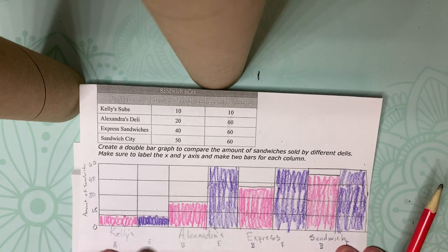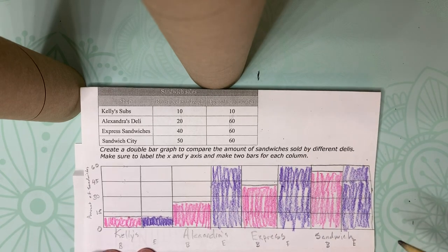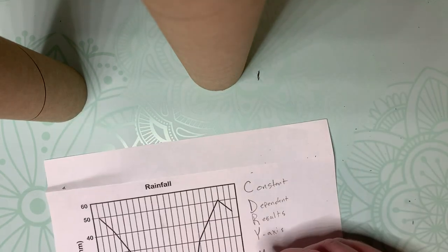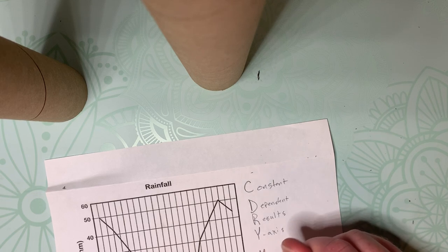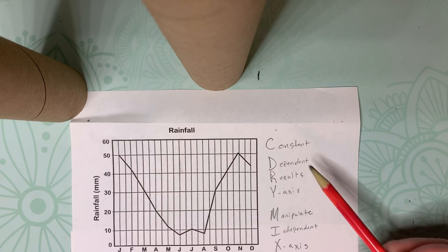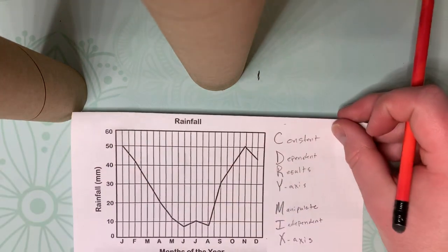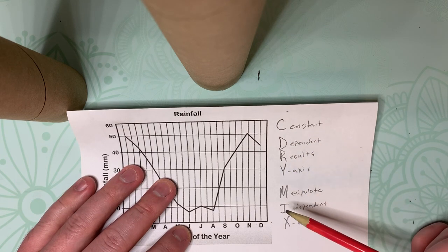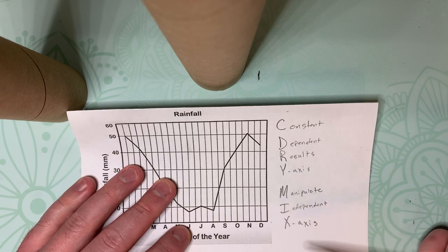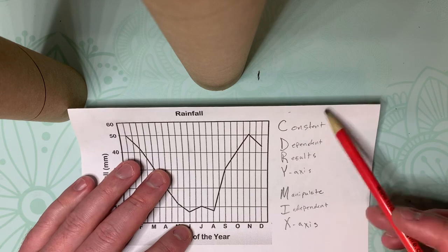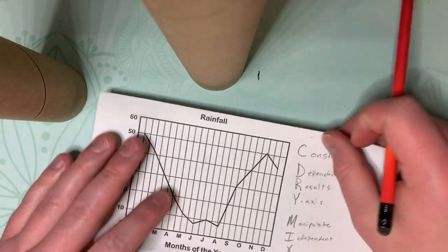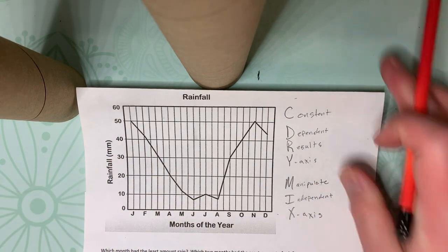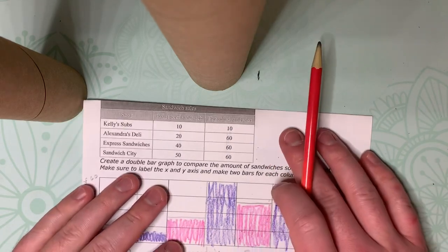So getting started with this, students, you do need to remember C-DRY-MIX. And that will help kind of push you through this. C-DRY-MIX is our constant, our dependent, which is our result, our y-axis, our independent variable, which we manipulate or we change, and then our x-axis. And this just kind of helps you set up graphs, look at graphs, figure out which one is your independent and dependent variable, and go from there. So C-DRY-MIX will help you get through some of this stuff.